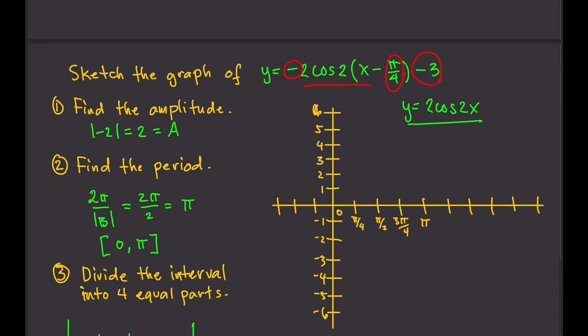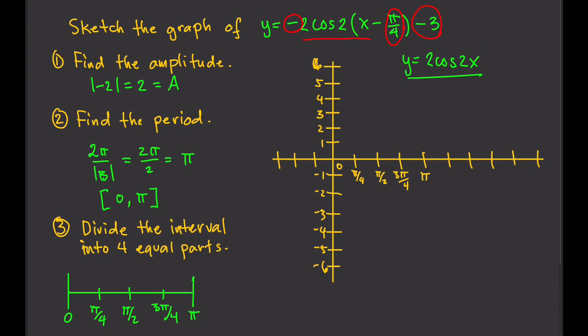The amplitude is 2, so that's the highest point. We start from 2. Why? Because the cosine function starts at the top — the highest point. The sine function starts at 0, the origin. The cosine function starts at the top, so the highest point is 2, and we start at 2.